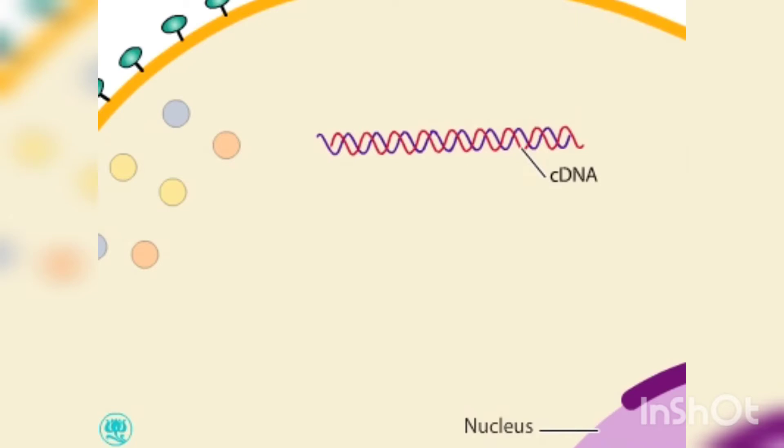Reverse transcriptase has a high error rate and frequently leaves mutations in the copied DNA. The mutations result in variant forms of HIV, which allow HIV to evolve quickly.